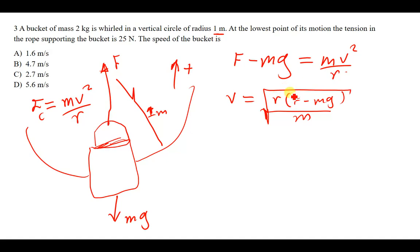So it's just a matter of replacing in the values here, the values that we have been given. So the value of v will then be equal to the root of - so r is given as one, and then F which is the tension force is given as 25, and then minus the mass which has been given to be 2. So 2 times gravity - I'll take my gravity to be 10, so I'll take g to be 10 meters per second squared. So 10 times 2, let me just say 2 times 10 so that at least you see what is happening.